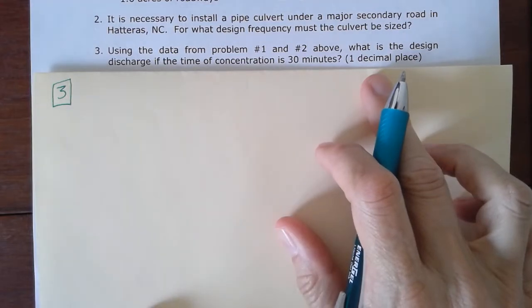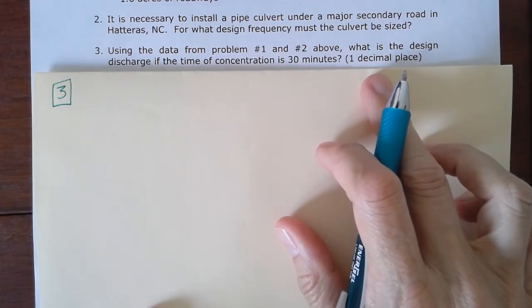For problem number three of the hydraulics homework, we're going to use the data from problems one and two and find the design discharge if the time of concentration is 30 minutes.